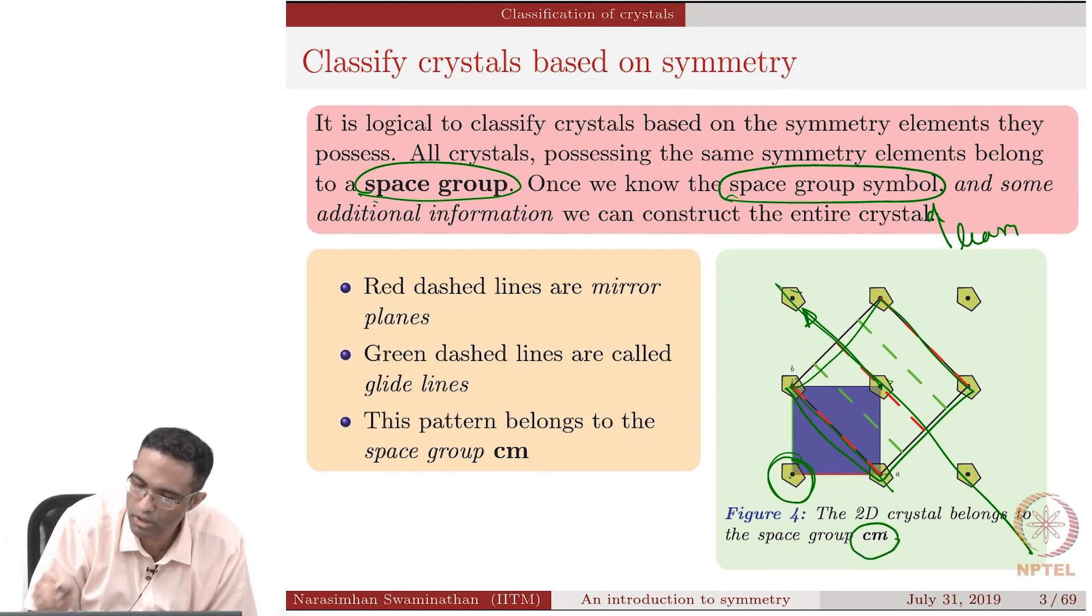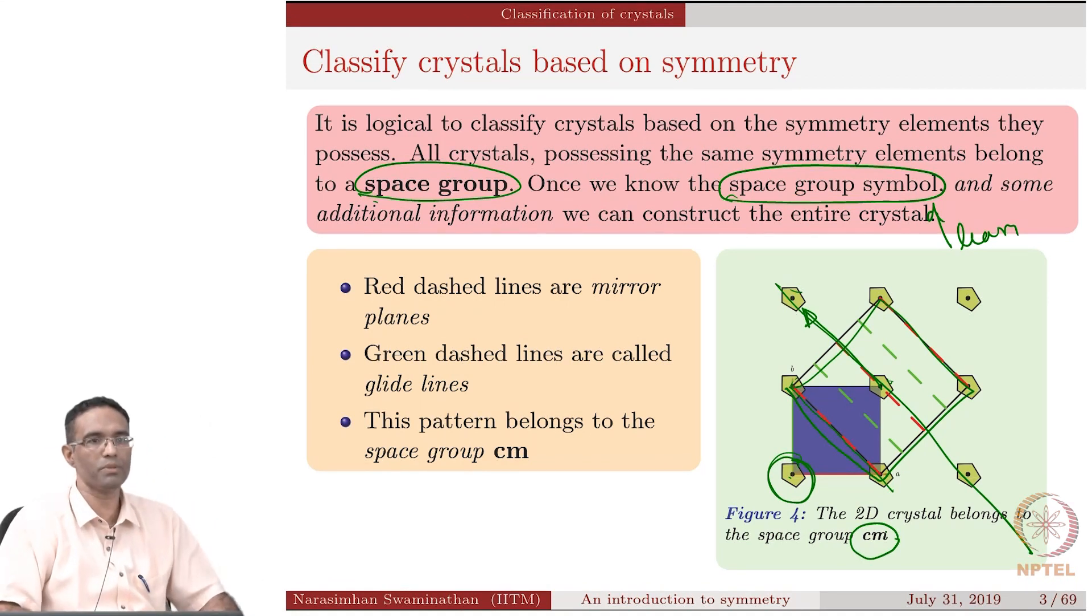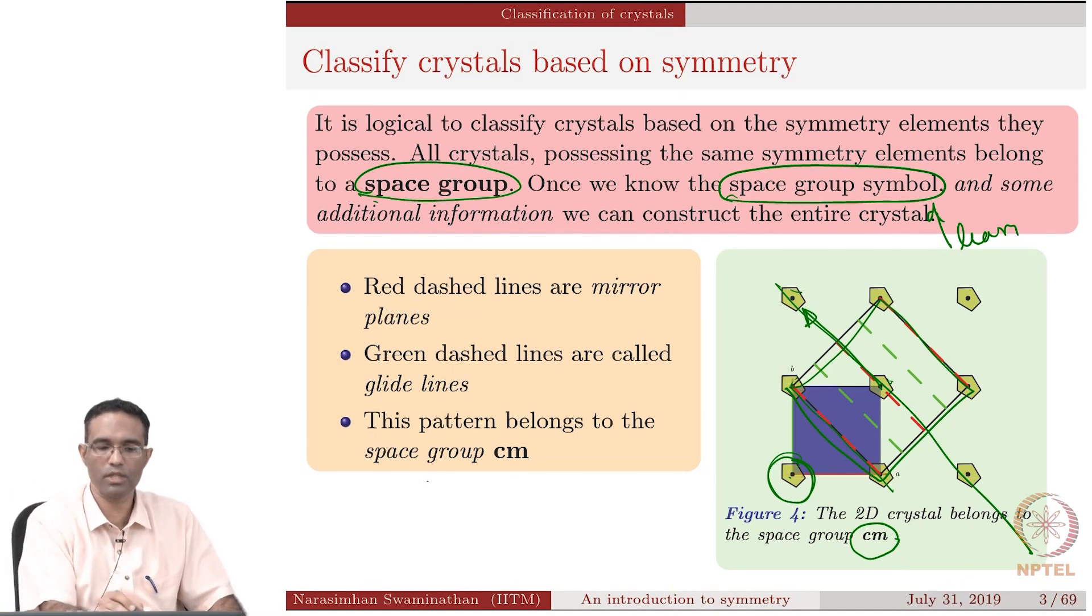This 2D crystal actually belongs to what is referred to as a space group Cm. We will see what those things mean. I just want to introduce you to the kind of stuff that we will be looking at. This belongs to the space group Cm, C for centered, M for mirror. But with respect to what is the centering, with respect to what the mirror exists is something we will see in a couple of lectures.